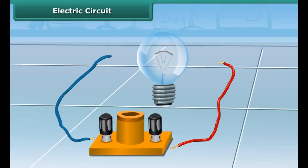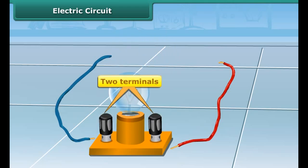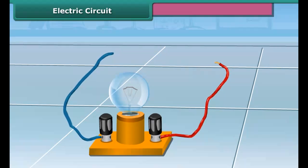Now fix the bulb on a bulb holder. The two screws on the bulb holder become two terminals. The insulated wires are connected to the two terminals on the holder as shown in the picture.